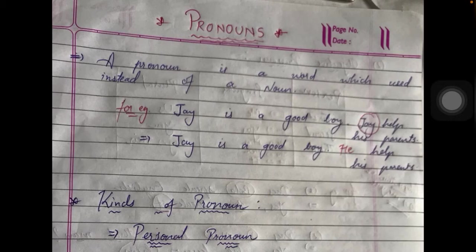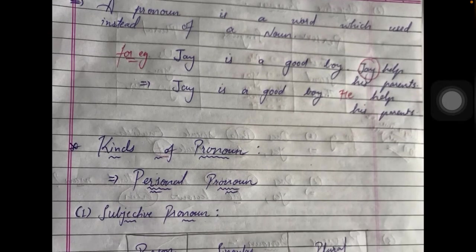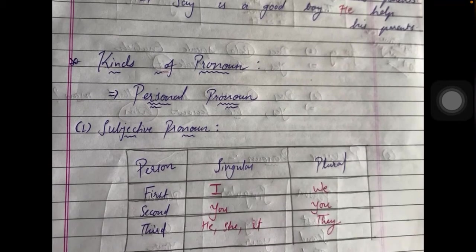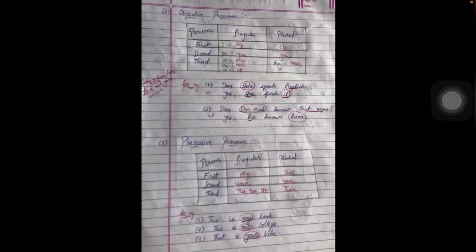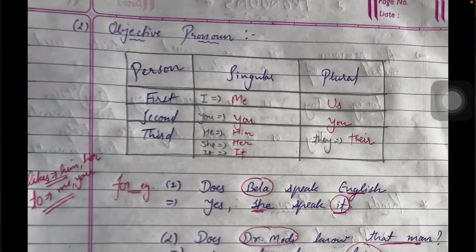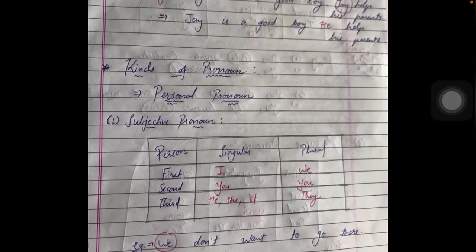There are lots of kinds of pronouns, but for fourth class you only need to study one type — personal pronouns. Personal pronouns are divided into three categories: the first is subject pronoun, the second is objective pronoun, and the third is possessive pronoun. We will now discuss all of these in detail.